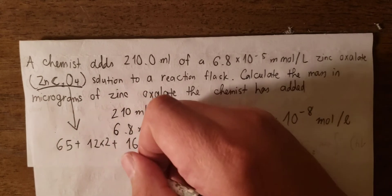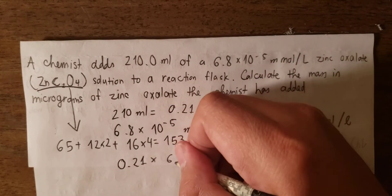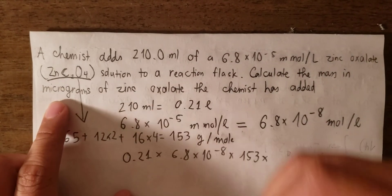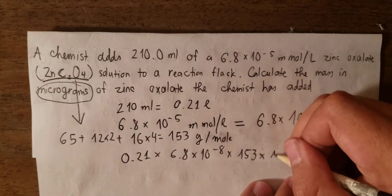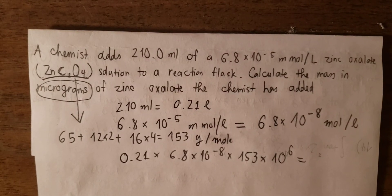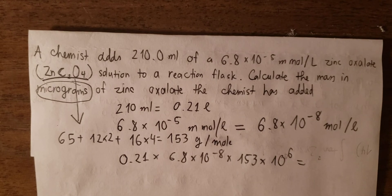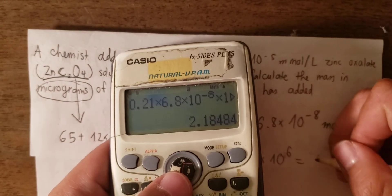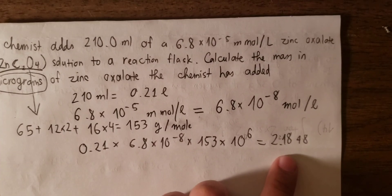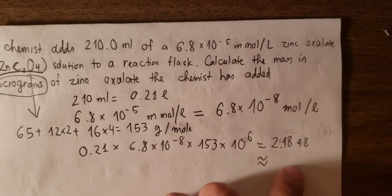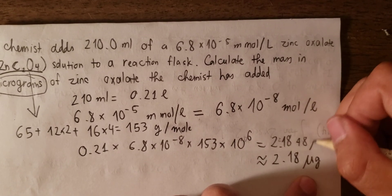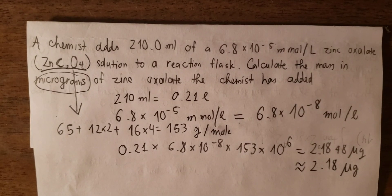Now we multiply the three numbers together: volume (0.21 L), concentration (6.8 × 10⁻⁸ mol/L), and molar mass (153 g/mol). Since the question asks for micrograms, we also multiply by 10⁶. The result is approximately 2.184 micrograms. Rounded to two significant digits, the answer is 2.2 micrograms.